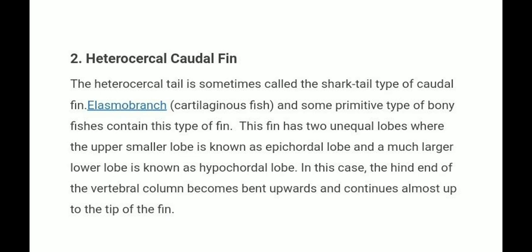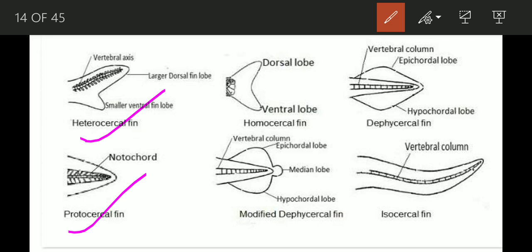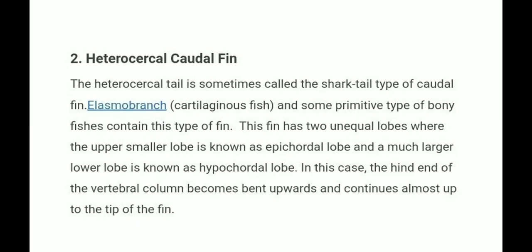The heterocercal caudal fin is sometimes called the shark tail type. It is found in elasmobranchs and some primitive bony fishes. This fin has two unequal lobes: the smaller upper lobe is the epicaudal lobe, and the much larger lower lobe is the hypocaudal lobe. The hind end of the vertebral column becomes bent upward and continues almost up to the tip of the fin.